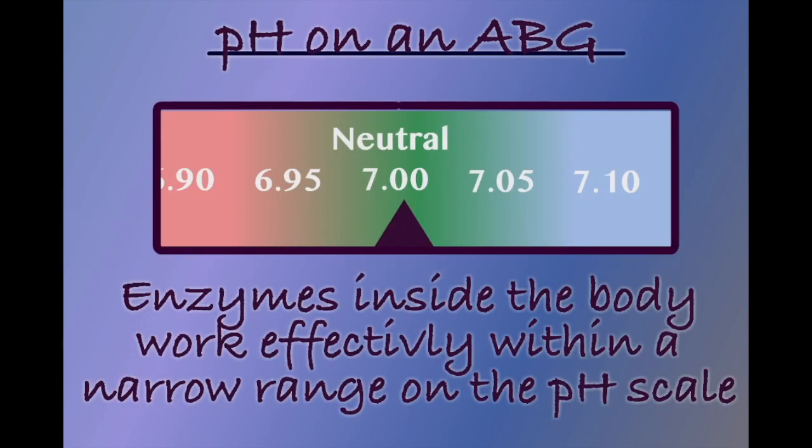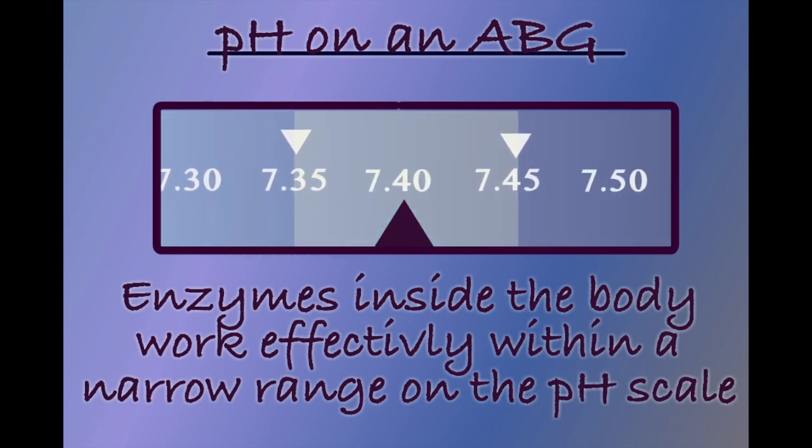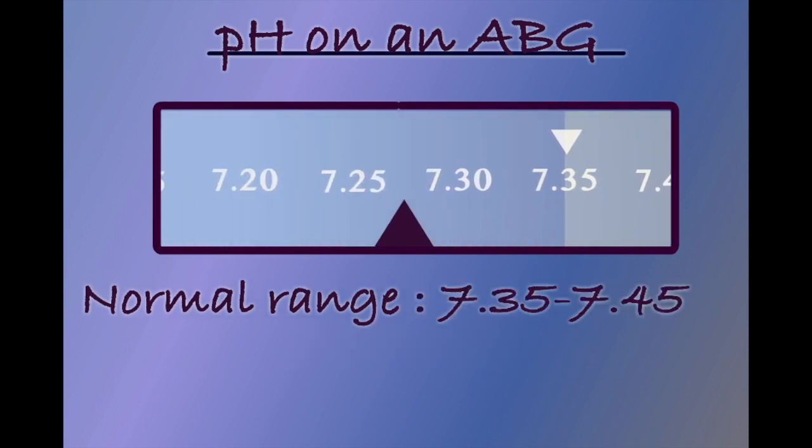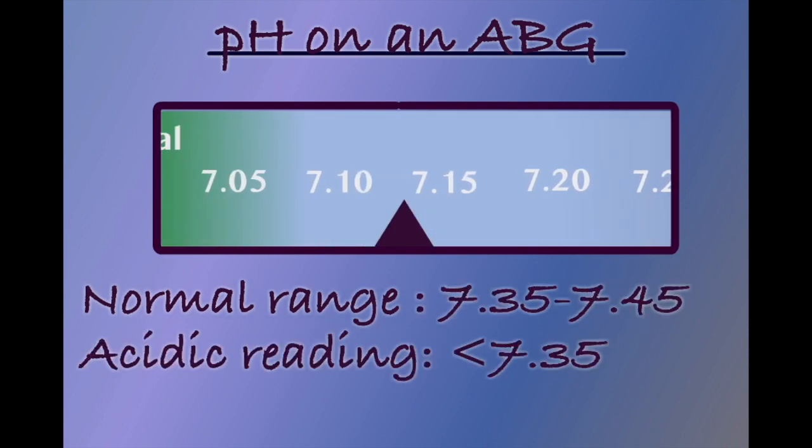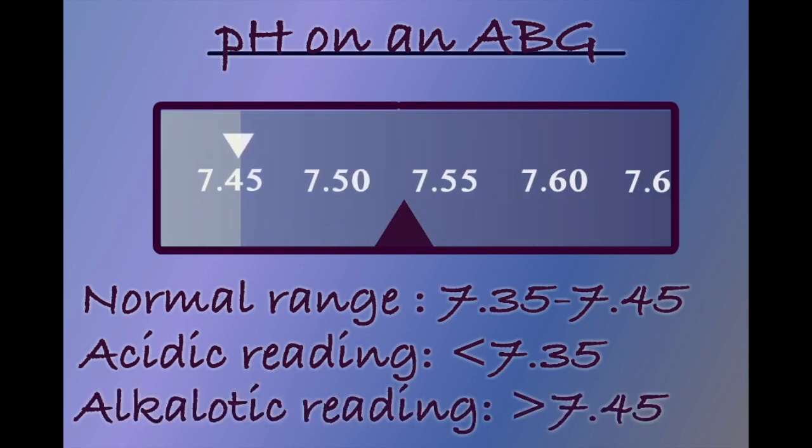The enzymes within our body work best within a very narrow range on the pH scale. A blood pH of 7.35 to 7.45 is considered optimal on an ABG. Anything less than 7.35 on an ABG is thought of as an acidotic reading. Anything greater than 7.45, an alkalotic reading.